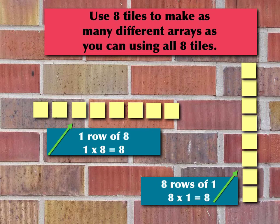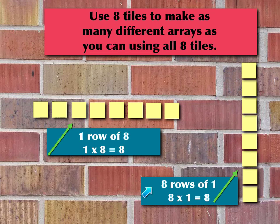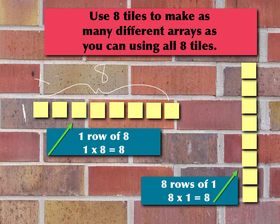We're going to take those eight tiles and do something different — make another array. We're going to put eight rows: one, two, three, four, five, six, seven, eight rows, but there's only one column. Over here there's one row and eight columns. Over here there's eight rows and one column going up and down. So this would be eight rows of one: eight times one is eight. This is one row of eight, and one times eight is eight. That's how we use arrays to find our factors, because our factor here is one, and we have eight — so one times eight is eight, and eight times one is eight.